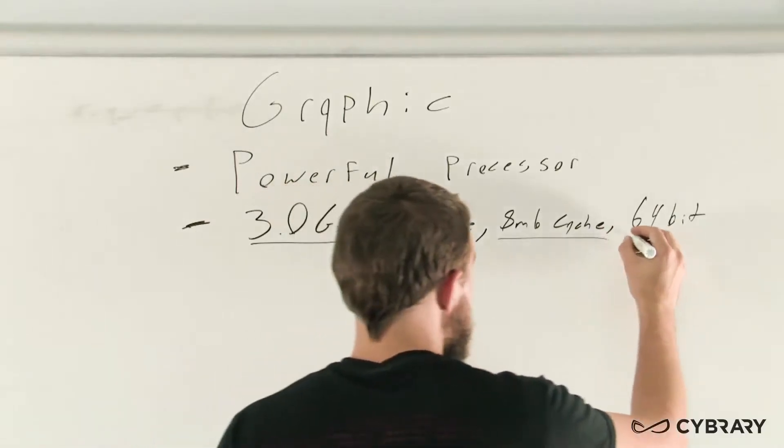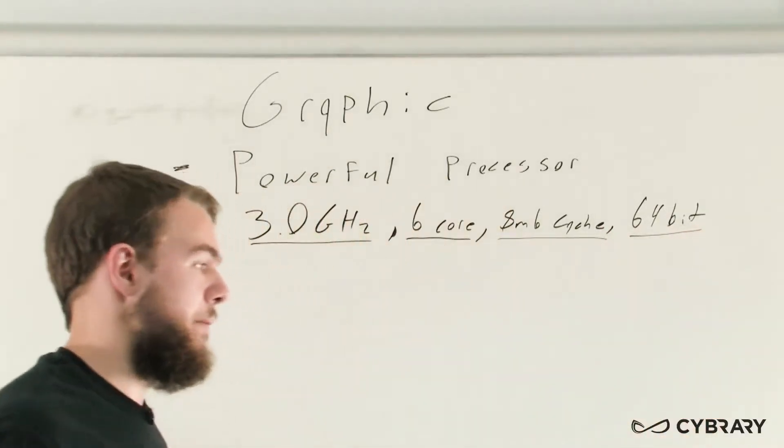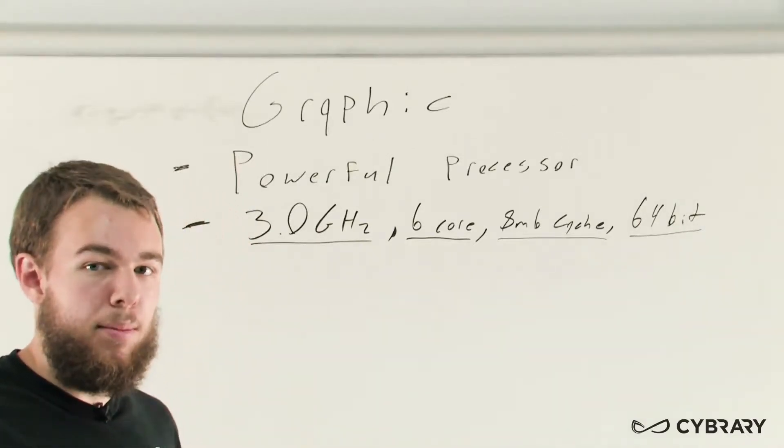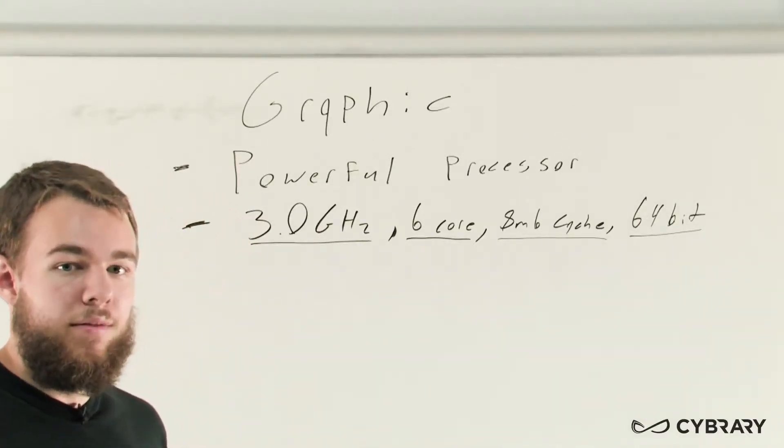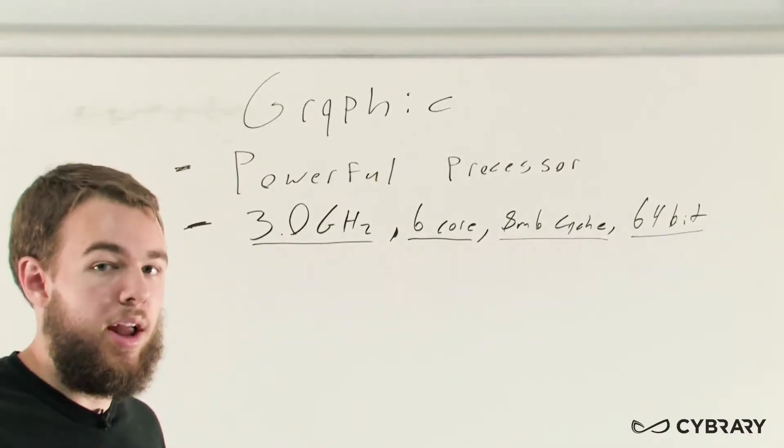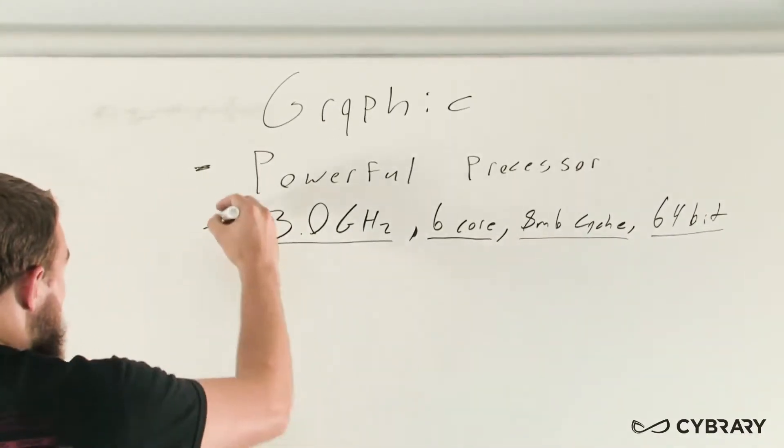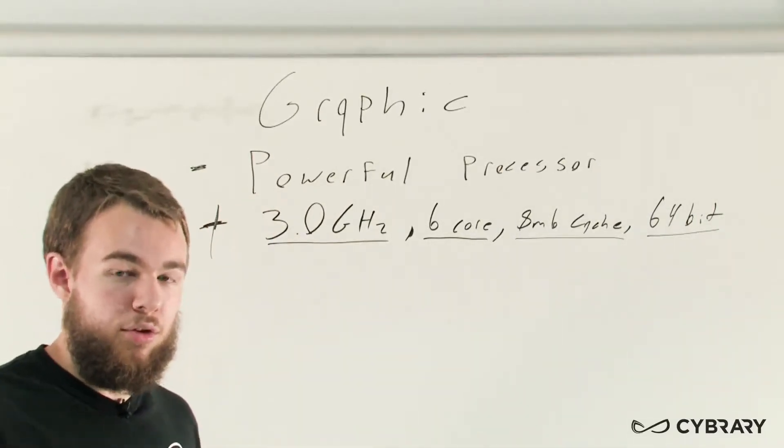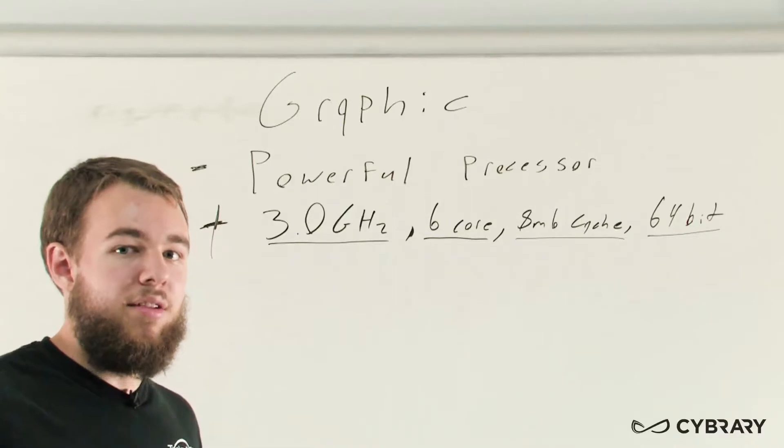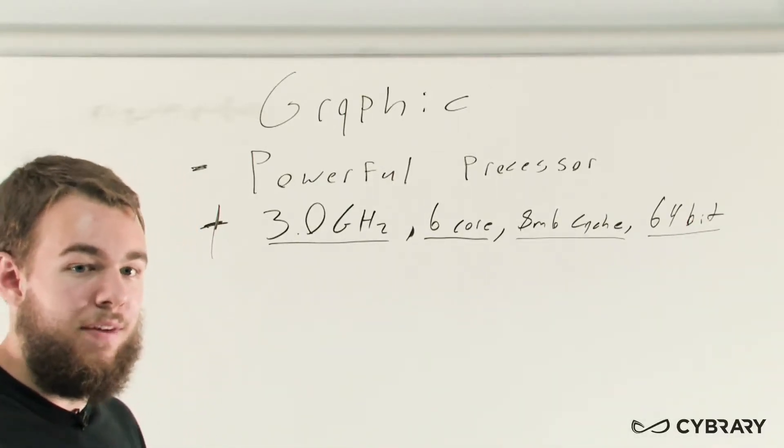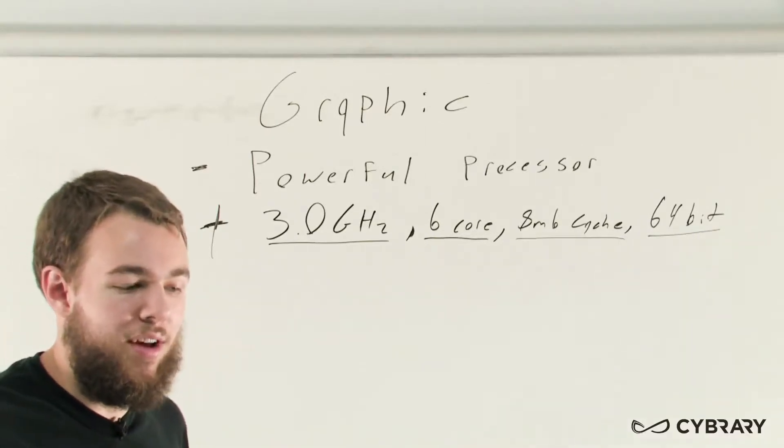And our 64-bit computer is going to allow us to have a higher amount of memory in our computer later and it helps us with instructions processing and addressing memory. That's our powerful processor requirements and that'll help us when we're running those different graphic design programs and rendering those 3D images a lot faster.